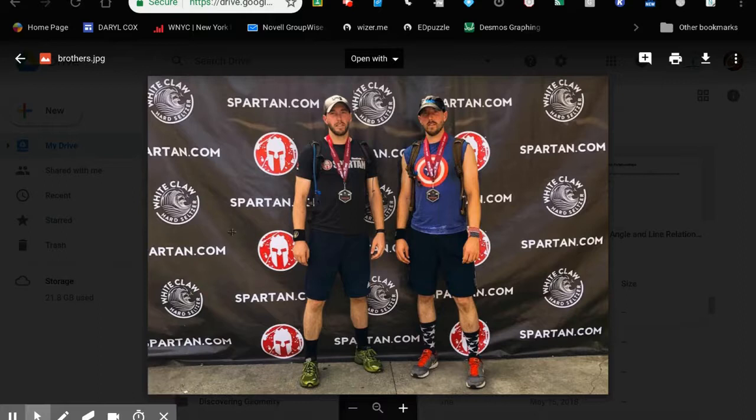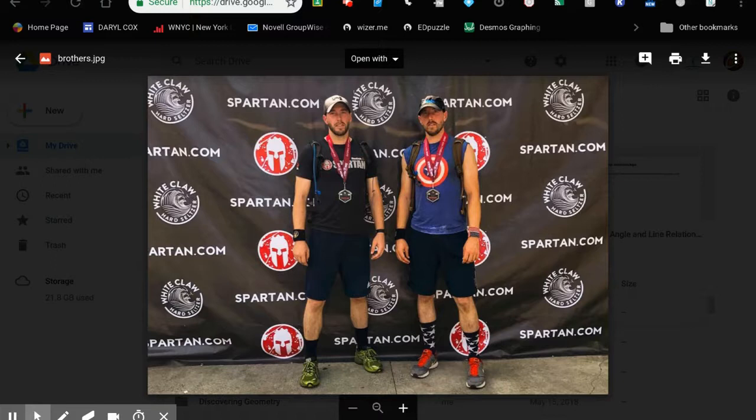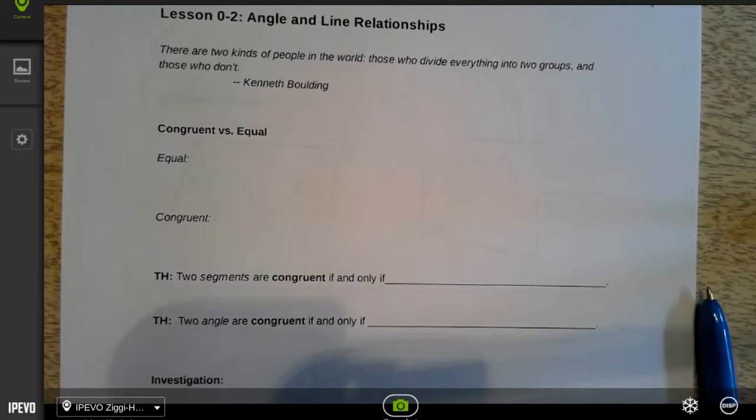But here's where they're not. They're not exactly the same person. They're not copies of each other. They are two separate people. So we could say they are not really equal because equal means that they have exactly the same value.